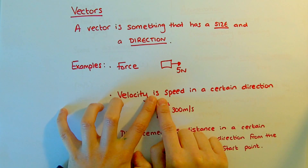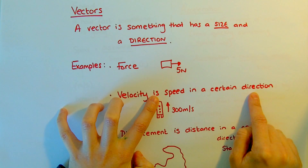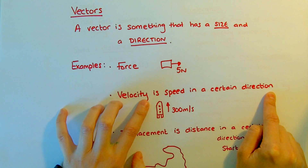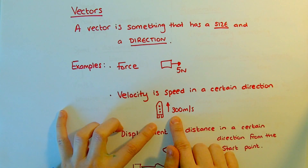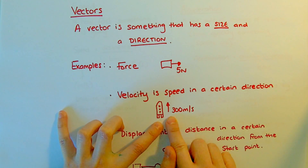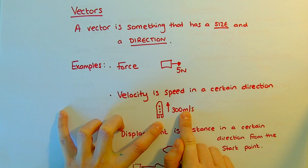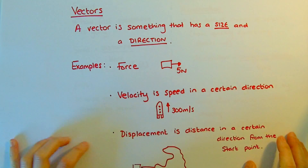Velocity is speed in a certain direction. So because it's got the direction, it is a vector. For example, this rocket here: the speed is 300, the direction is up. Size and a direction makes it a vector.